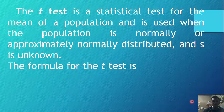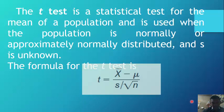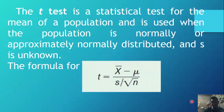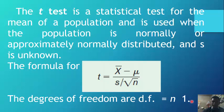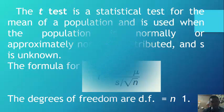The t-test is used when σ is unknown. The formula for the t-test is: t is equal to x-bar minus μ, over s divided by the square root of n. The degrees of freedom (df) is equal to n minus one.